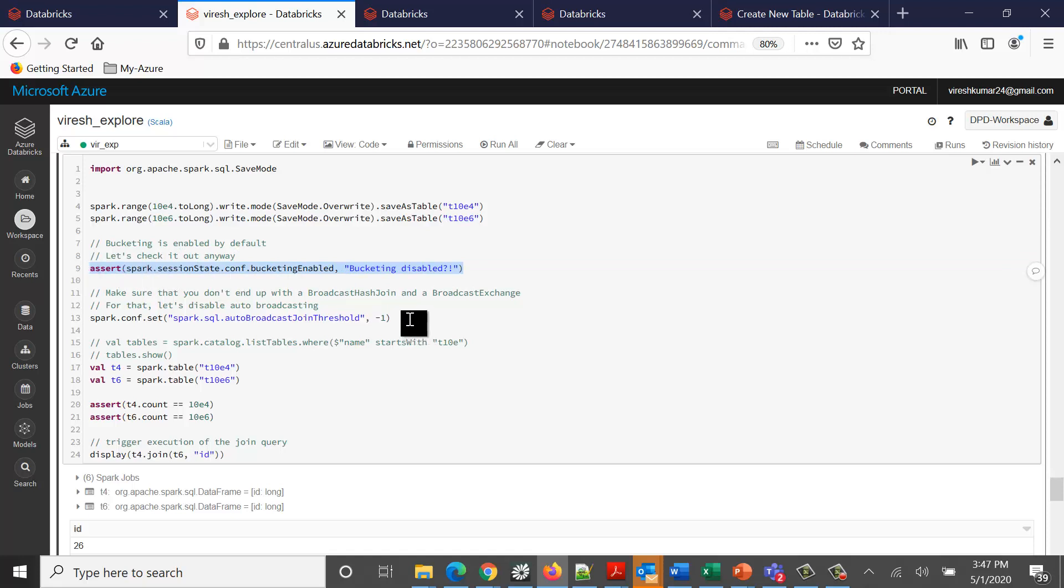I've disabled auto broadcast join so the system should not convert into a broadcast join. Ideally there are two dataframes or tables involved in this particular join which are both bigger in size, so it's an ideal candidate for a sort merge join, which we discussed in one of the previous videos about different joins in the Spark world.